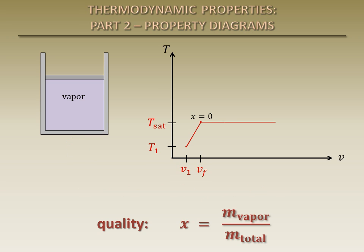At the moment all of the liquid has vaporized, the substance becomes a saturated vapor. Any heat lost at this point will cause some of the vapor to condense and change back to a liquid. Note that a saturated vapor is still at the saturation temperature. The specific volume of a saturated vapor is denoted by VG. Because all of the mass is in the vapor state, the quality of a saturated vapor is 1.